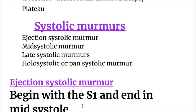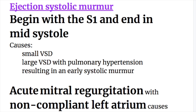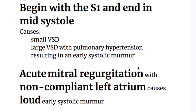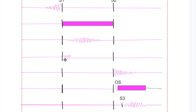A systolic murmur may be ejection systolic, mid systolic, late systolic, or holosystolic or pansystolic murmur. The ejection systolic murmur begins with the first heart sound and ends in the mid systole.